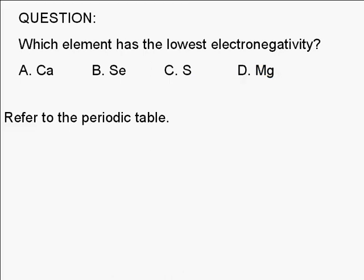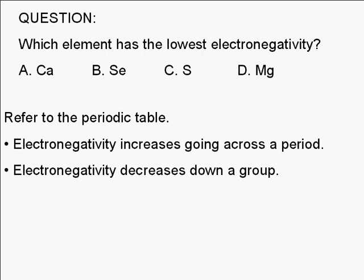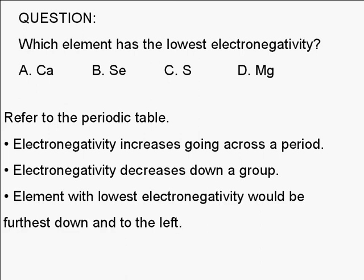To answer this we need to look at the periodic table. The trends for electronegativity are: electronegativity increases going across a period, and electronegativity decreases down a group. So the element with the lowest electronegativity would be the one furthest down and to the left.